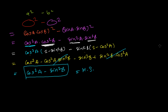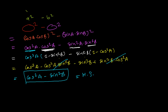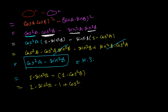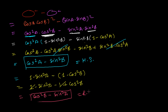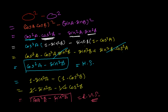Now for the second case, we need cos²B minus sin²A. We convert cos²A into (1 − sin²A) and sin²B into (1 − cos²B). Opening the brackets, the −1 and +1 cancel, and the final answer is cos²B minus sin²A — which is the second right-hand side required by the equation.